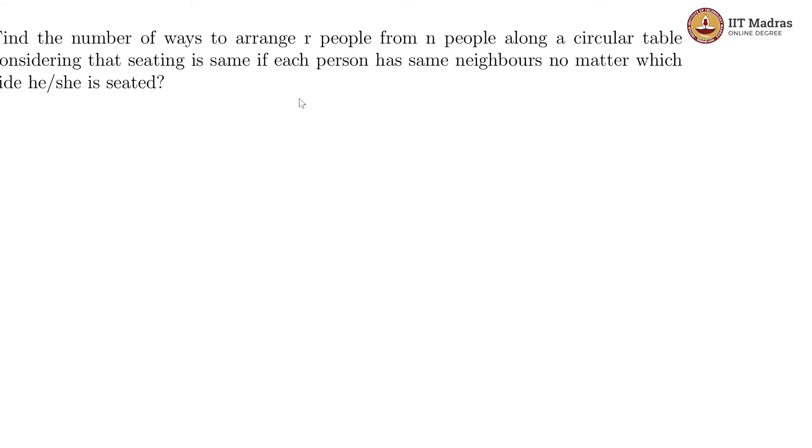In this question, we are expected to arrange r people from n people along a circular table, so it is a circular permutation. However, they are saying that the seating is same if each person has same neighbors no matter which side he is seated.